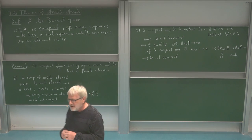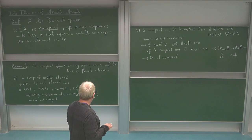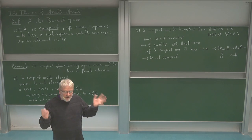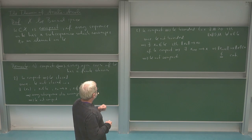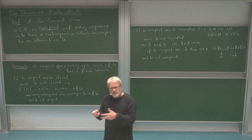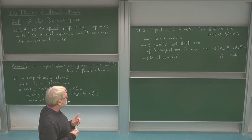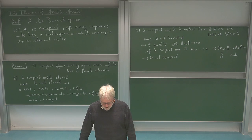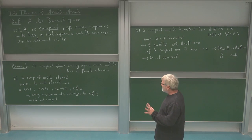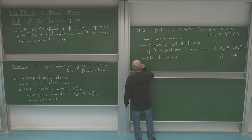So here we have two properties which compact sets always have: they must be closed and bounded. Of course, one would like to know if this is enough to guarantee compactness. Closed and bounded are things which are usually easy to check. In the finite dimensional case, if our Banach space is finite dimensional, then those two properties are actually enough — that's the famous theorem of Heine-Borel. In finite dimensions, compactness is exactly the same as being closed and bounded.